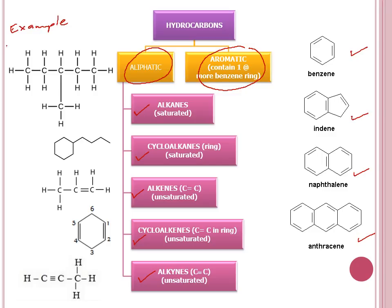The first example is an alkane. There are five carbons in the longest chain — one, two, three, four, five. We circle the substituent. So the naming would be 3-methylpentane.